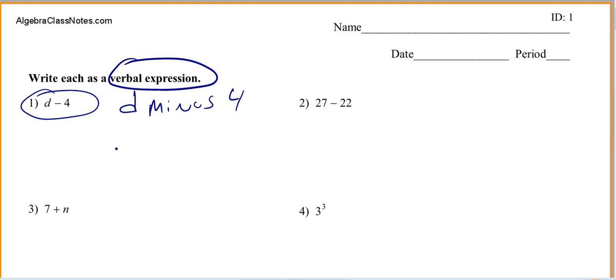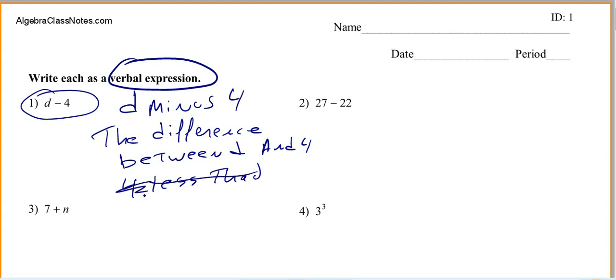Your teacher could say, hey, write this one two different ways. So if that happens, you need another way of doing it. So you could say the difference between D and 4.